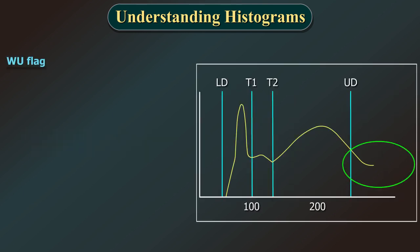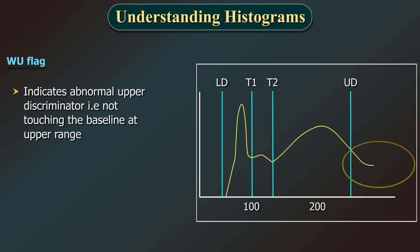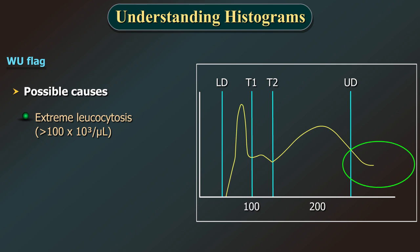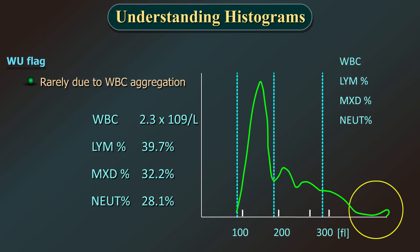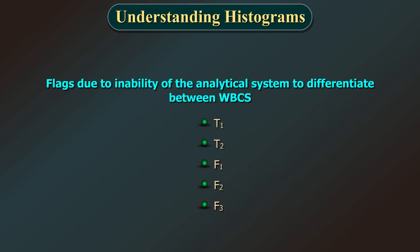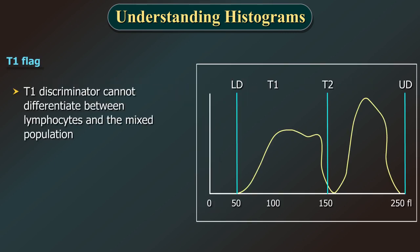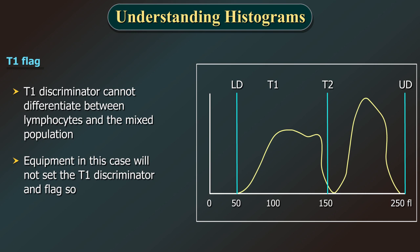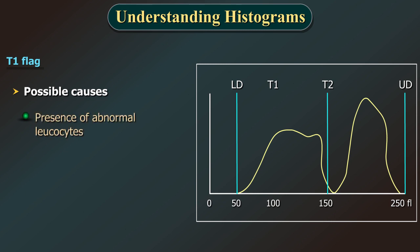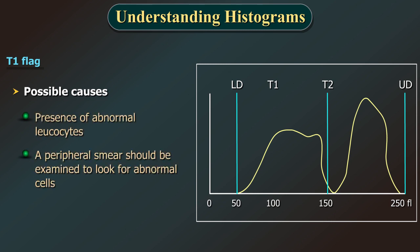Check manually. WU flag indicates abnormal upper discriminator — not touching the baseline at upper range. Possible causes: extreme leukocytosis (more than 100 × 10³/µL) where linearity is exceeded, or rarely WBC aggregation. T1 flag: the T1 discriminator cannot differentiate between lymphocytes and the mixed population; the equipment will not set the T1 discriminator. Possible cause: presence of abnormal leukocytes. A peripheral smear should be examined to look for abnormal cells. T2 flag: the T2 discriminator cannot differentiate between mixed cells and polymorphs. Possible cause: presence of abnormal leukocytes; examine peripheral smear.